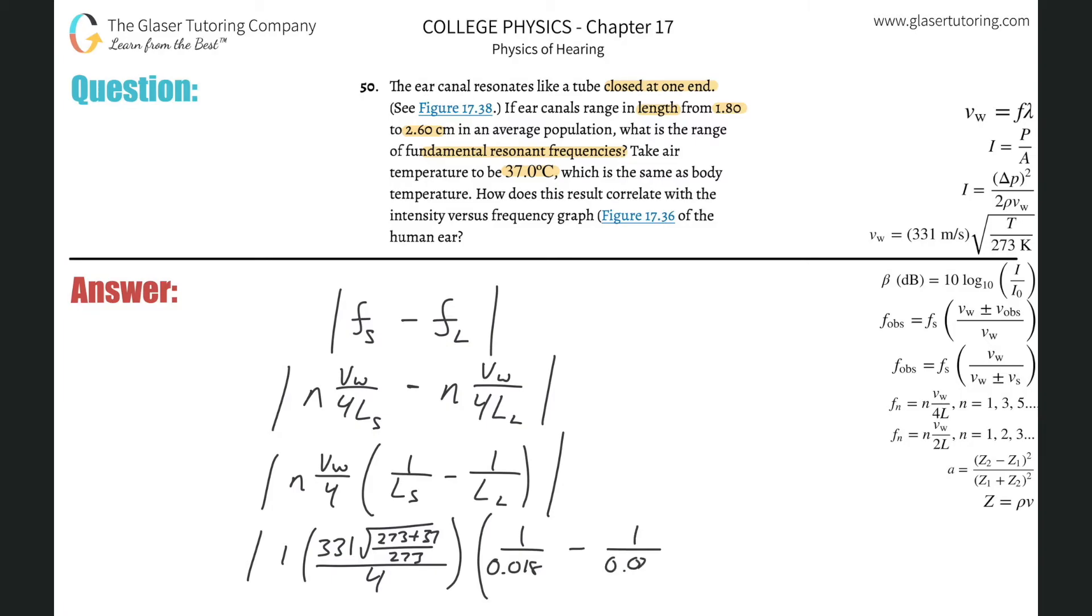Then just do the math. Let's do 331 times the square root, parenthesis of 273 plus 37, close those parentheses, then divide it by 273, and then take that whole thing and divide it by four.